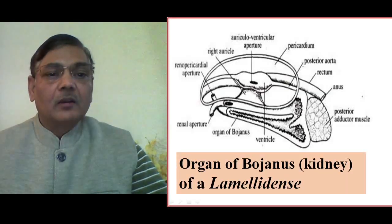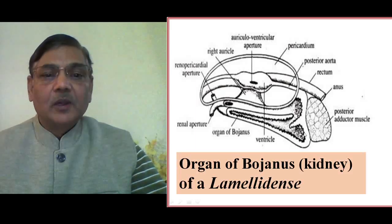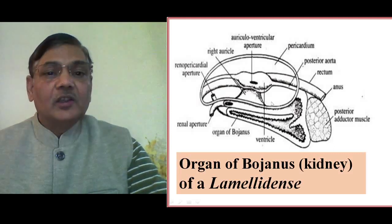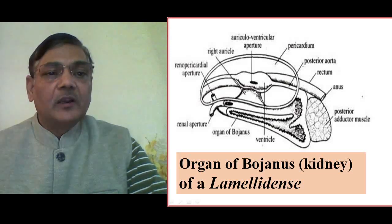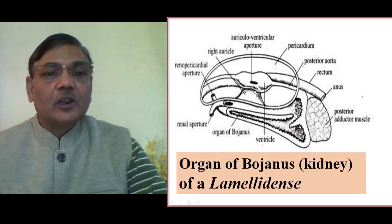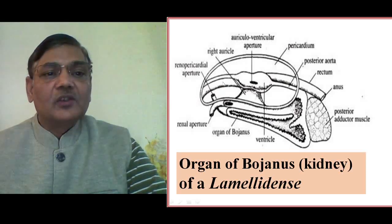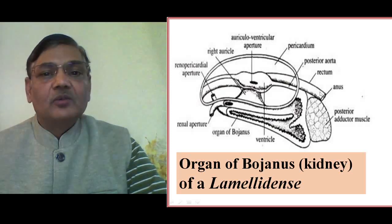Now, another organ of Bojanus can be observed in Lamellidens, a bivalve animal. Unio is another representative of class Bivalvia or Pelecypoda. In the diagram, three structures are mainly shown. On the upper side is the pericardium, in which the heart is located — you can see the right auricle, left auricle, and ventricle above. The portion of the intestine is also present. In Lamellidens, the intestine pierces into the pericardium and comes out from the other end.